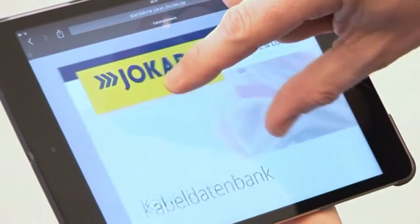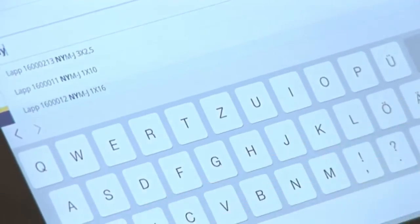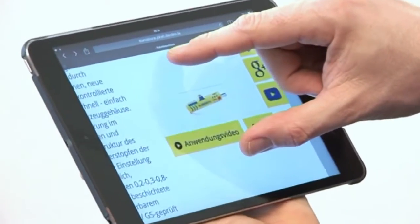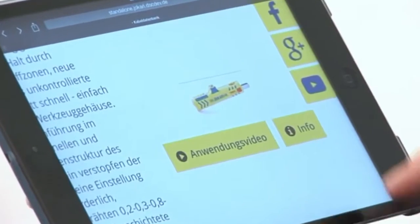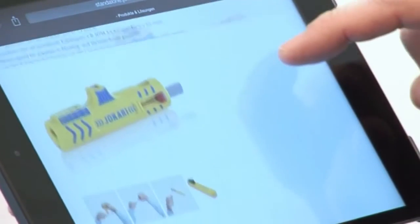But we are not only tool manufacturers. We see Jokari as a solution finder. Do you know our cable database? Type in whatever you read on the cable and the database suggests you the right tool. This is one solution of Jokari which makes it easy to find the right stripping tool on the internet.